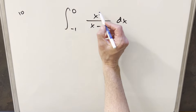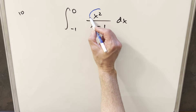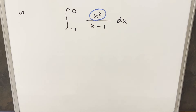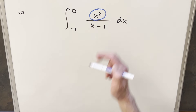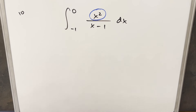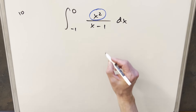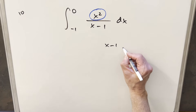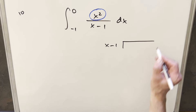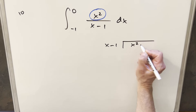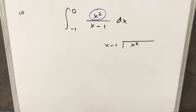What I noticed first is we've got a higher power in the numerator. Whenever you have a higher power in the numerator, you have to do polynomial long division. I'm going to do it this time just because I skip it a lot, and I feel obligated to do it so people know how to do it.